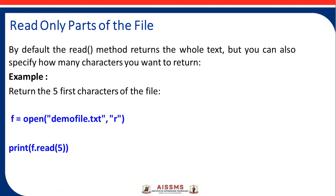To read only parts of the file — by default, the read method returns the whole text, but you can also specify how many characters you want to return. For example, to return the first five characters of the file: f = open('filename.txt', 'r'), then print(f.read(5)) to read five characters.